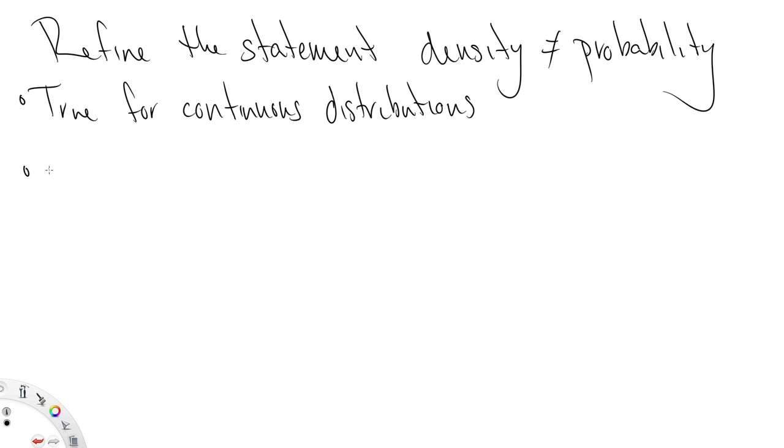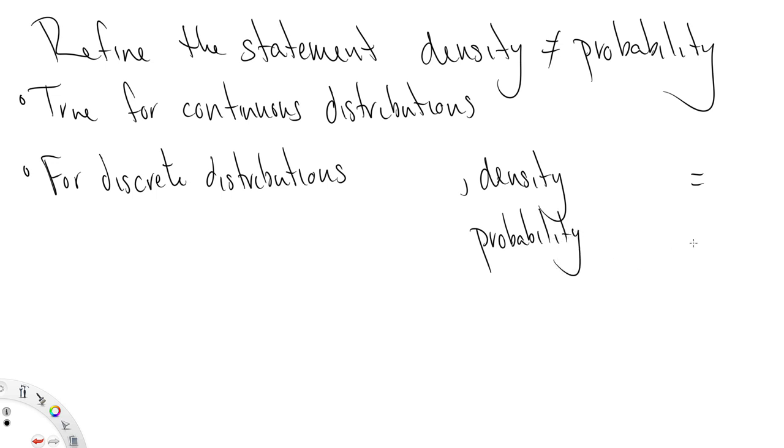But, and here's how we're going to modify this. For discrete distributions, density equals probability. I'm going to leave some spaces in here, because there's some nuance. So we'll remind you that, in general, probability is area under a density function. And that remains true.